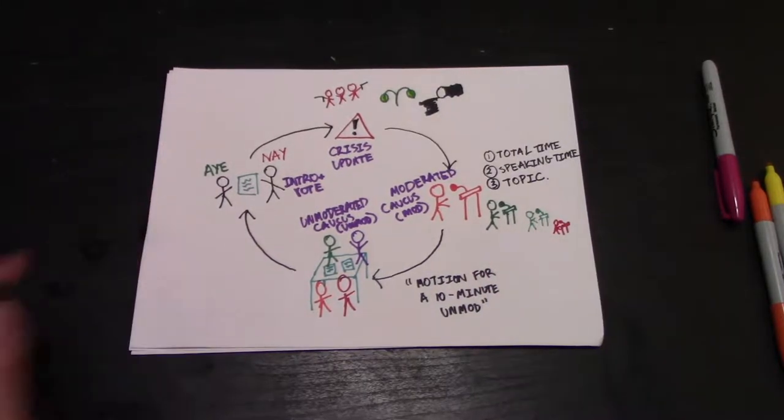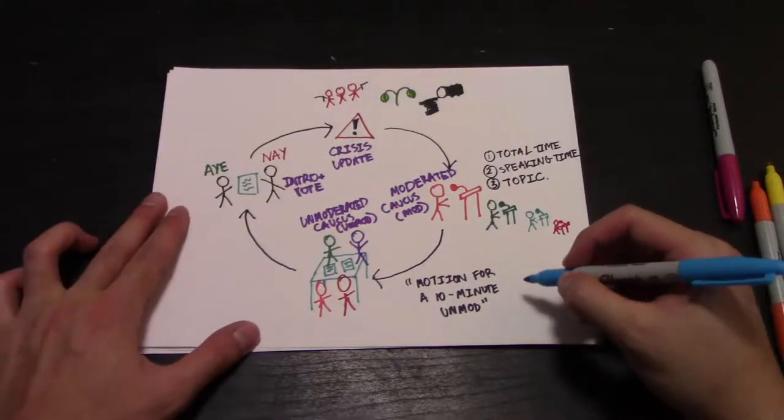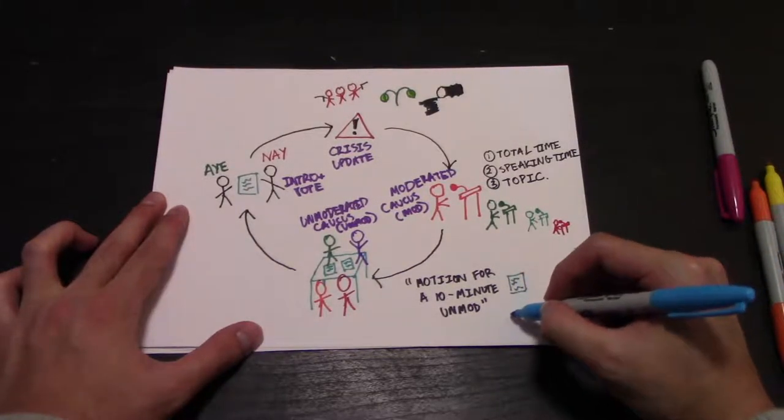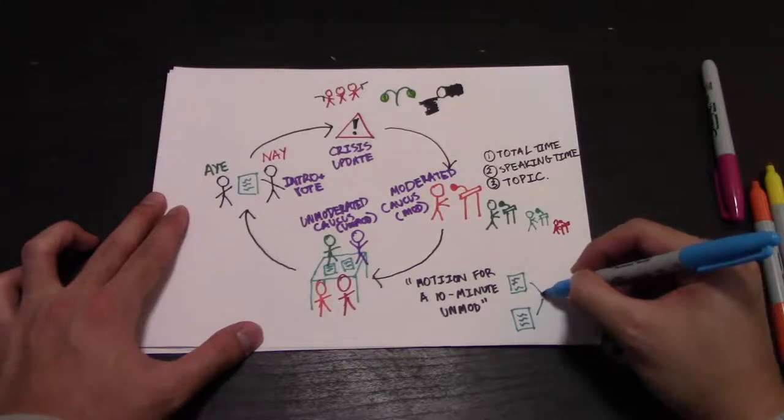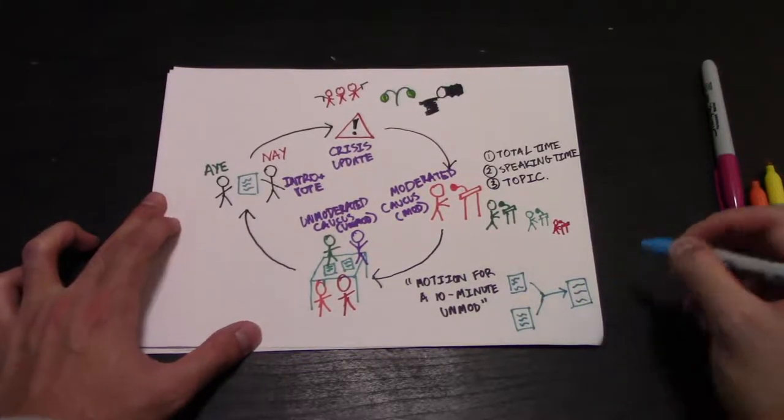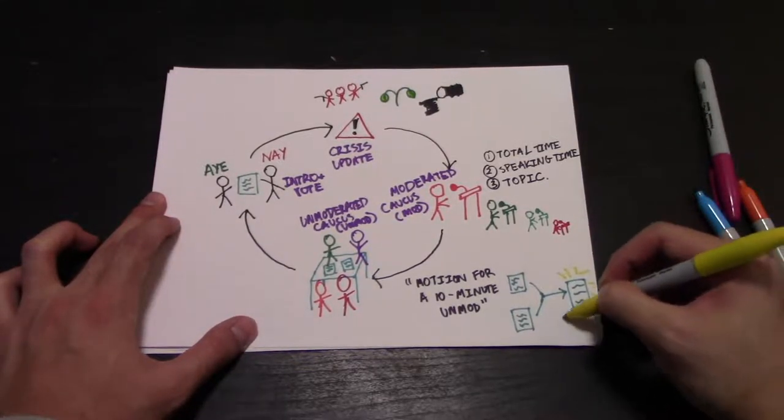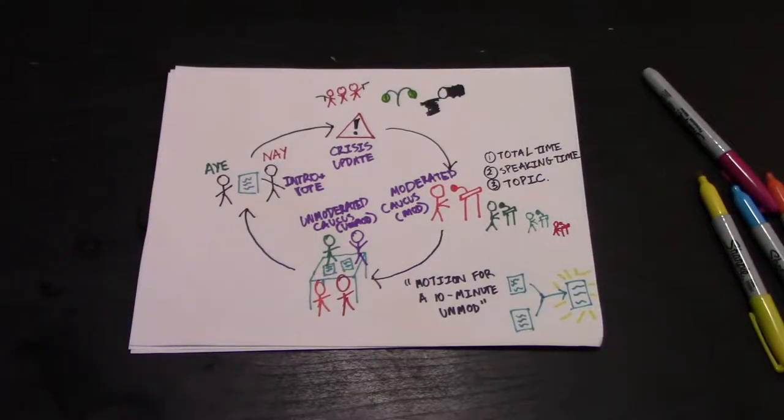You would declare: motion for a 10 minute unmoderated caucus. What you want to do during this unmod is to merge the ideas that you and your fellow delegates have been working on into a fewer number of directives. Merging directives that have basically the same idea makes it easier for the committee to focus on the substance of the ideas that you all have proposed.